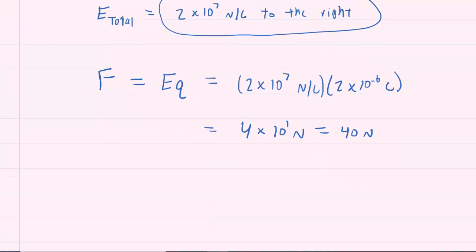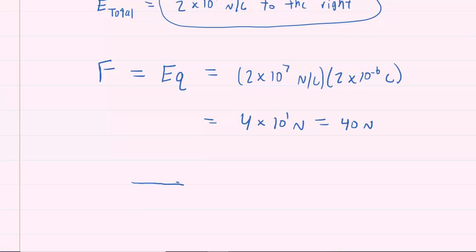Now as for the direction, we have an electric field that's pointing to the right, but whenever you place a negative charge in an electric field, the force actually acts opposite to the field. So you actually have your electric force pointing to the left in this case, because a negative charge placed in a field will experience a force opposite direction to that of the field. So if the field points to the right, the force will be to the left. And so this completes the answer to part B of the question.